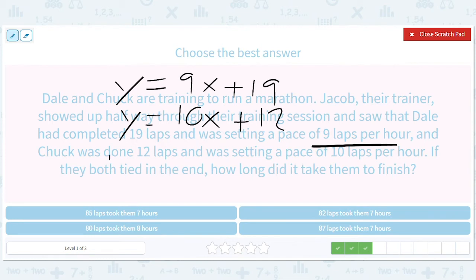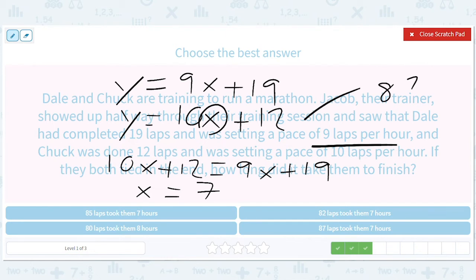Set them equal. 10X plus 12 equals 9X plus 19. Subtract 9X. Subtract 12. X equals 7. Put the 7 in here. That's way easier. 10 times 7 is 70. Plus 12 is 82. So we should be looking for the 7 and the 82. That's 7 hours, 82 laps.